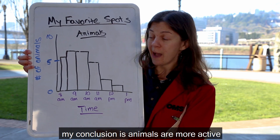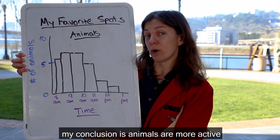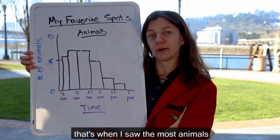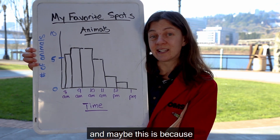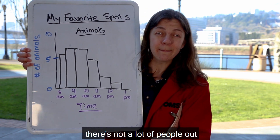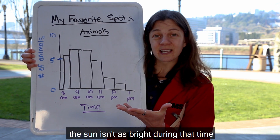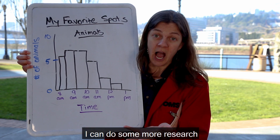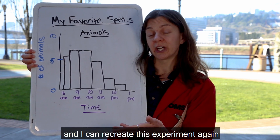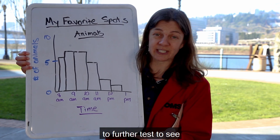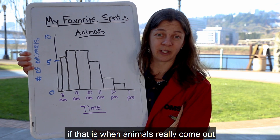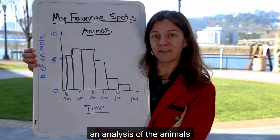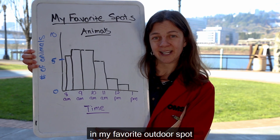My conclusion is that animals are more active during the morning hours — that's when I saw the most animals. Maybe this is because there aren't a lot of people out and the sun isn't as bright, so animals feel more comfortable coming outside. I can do some more research and recreate this experiment again to further test when animals really come out, and that is an analysis of the animals in my favorite outdoor spot.